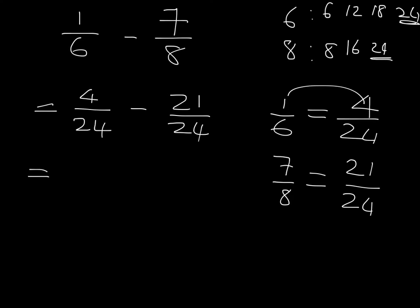So we've got four over 24 and we're going to take away 21 over 24. So we're going to then say, we've got four of those 24ths and we're going to take away 21 of those 24ths. And so we're going to end up, we take four and subtract 21, we get negative 17 over 24.